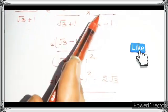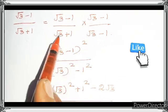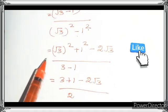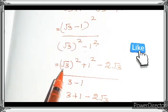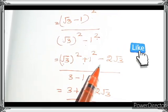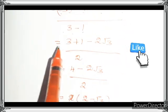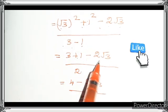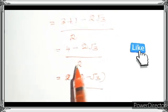So that is root 3 minus 1 the whole square, divided by root 3 plus 1 times root 3 minus 1 — that is A plus B times A minus B. So root 3 squared minus 1 squared. This is the A minus B whole square formula. That is root 3 squared plus 1 squared minus 2 root 3, divided by 3 minus 1. So root 3 squared is 3. So 3 plus 1 minus 2 root 3 divided by 2, that is equal to 4 minus 2 root 3 by 2.